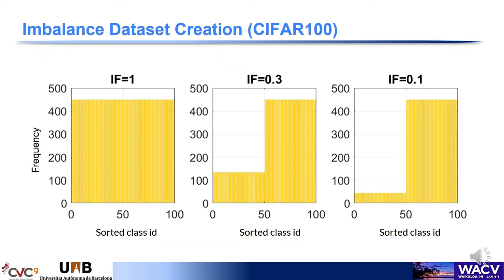To produce imbalanced datasets for our experiments, we reserve 10% of the data as the initial label set and we created an imbalanced dataset with the remaining 90% by removing randomly samples from half of the classes. The imbalance factors on top of the distributions indicate the number of samples in the minority class divided by the number of samples in the majority class. So when the imbalance factor is lower, the imbalance is heavier.